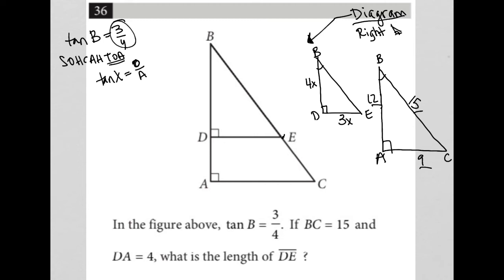So, this is useful for us. The next thing we're told is that DA equals 4. So, I don't have a DA in either of the right triangles that I've drawn. But I do have DA in my original right triangle, and I know that that's 4. Now, how does that help me? Well, I know from here that the entire length of BA is 12.